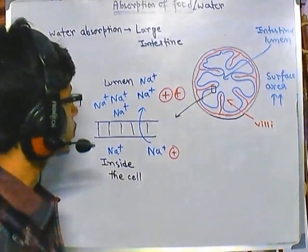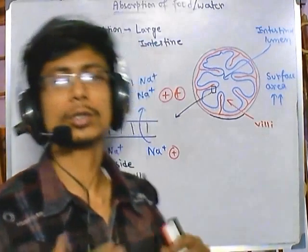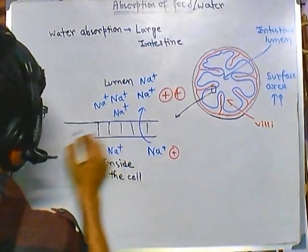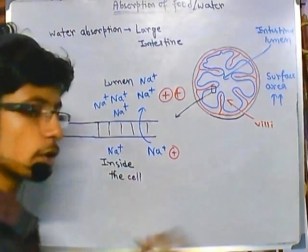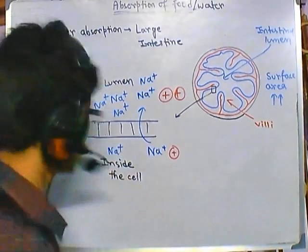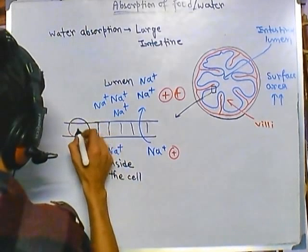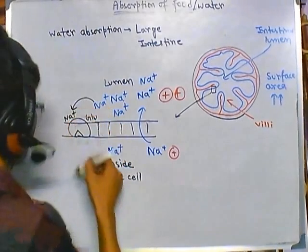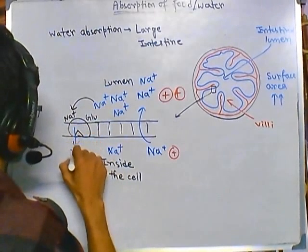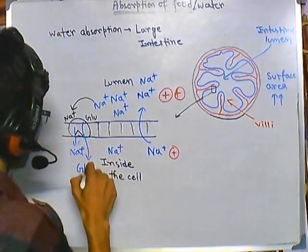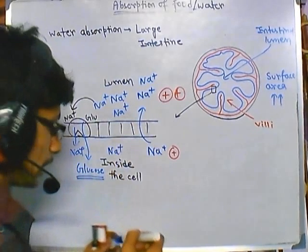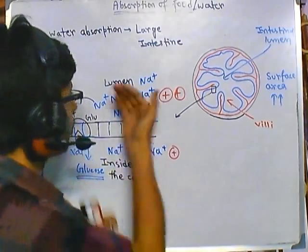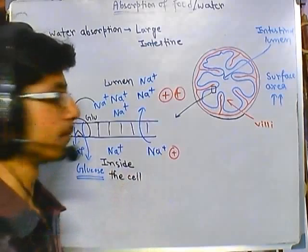As sodium tries to move inward, there is a transporter called the sodium-glucose transporter, which is called a symporter. A symporter means one ion channel helps to transport two different things in the same direction. As you can see, the symporter molecule binds with both sodium and glucose. When it allows sodium to get inside, it also helps glucose to get inside — this way glucose can easily be taken up by the intestinal cells. Along with glucose, water molecules are also present due to this ionic gradient change.